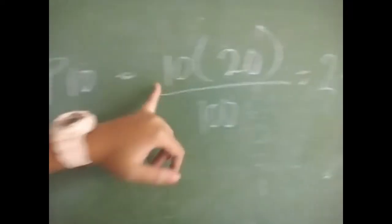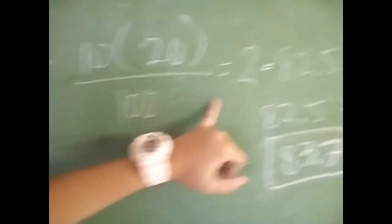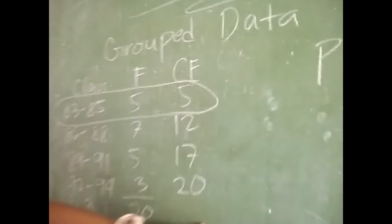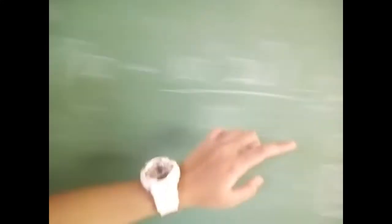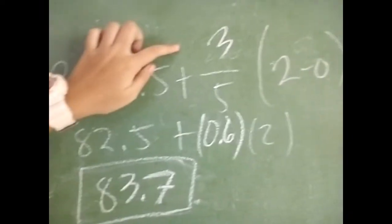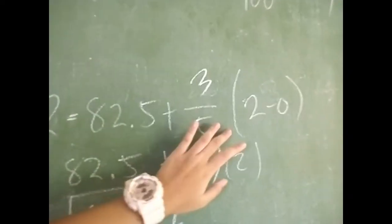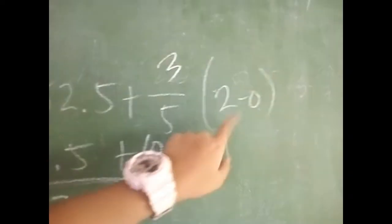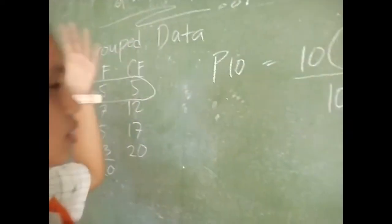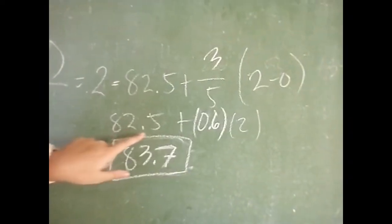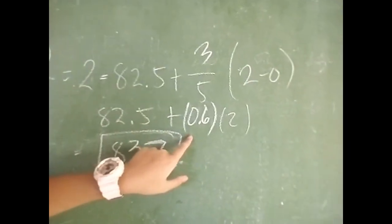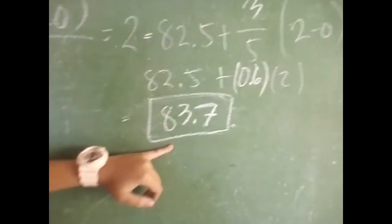Here's the example for the previous class. We have P10. First, you find K times N divided by 100: 10 times 20 divided by 100 equals 2. Looking at the cumulative frequency CF, it falls between class with CF of 5. So the lower boundary would be 82.5, plus the class interval 3 divided by the frequency 5, times 2 minus 0. So it would be 82.5 plus 0.6 times 2, and that would be 83.7.